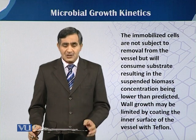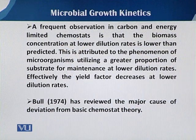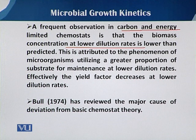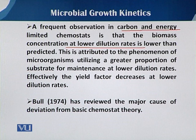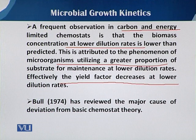This creates another situation inside the fermenter that can affect conditions in a number of ways. A frequent observation in carbon and energy limited chemostats is that the biomass concentration at lower dilution rates is lower than predicted. This is attributed to the phenomenon of microorganisms utilizing a greater proportion of the substrate for maintenance at lower dilution rates. Effectively, the yield factor decreases at lower dilution rates.